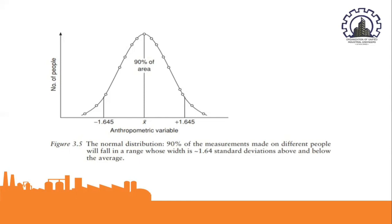The mean is the sum of all individual measurements divided by the number of measurements — a measure of central tendency. The standard deviation is calculated using the difference between each individual measurement and the mean; it is a measure of the degree of dispersion. The value of the mean determines the position of the normal distribution along the x-axis, while the value of the standard deviation determines its shape.